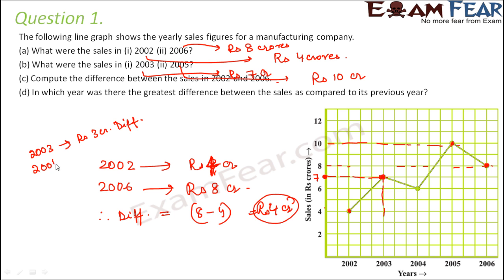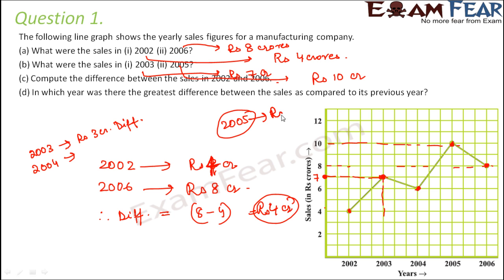For 2004, the difference from the previous year is 7 minus 6, which is 1 crore. For 2005, sales were 10 crores and in 2004 they were 6 crores, so the difference is 10 minus 6, which is 4 crores. This value is maximum for 2005, so 2005 is the correct answer.